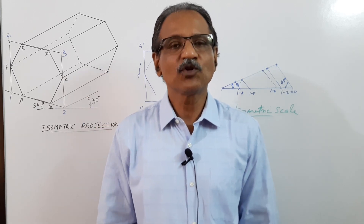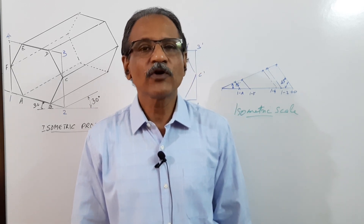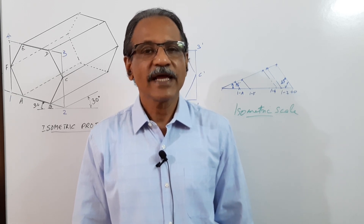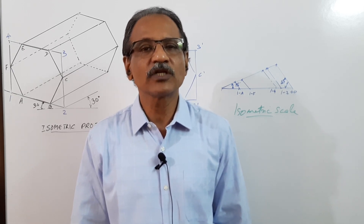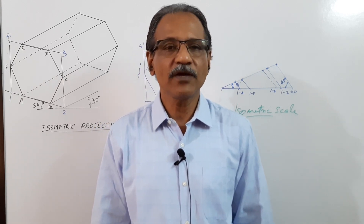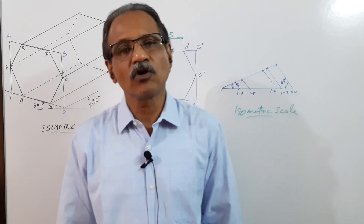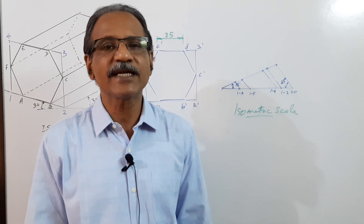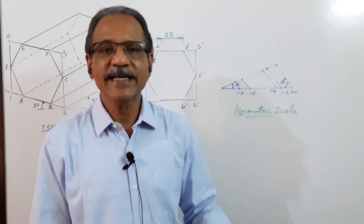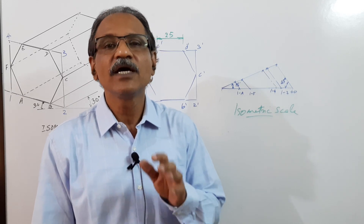Hi students, welcome to engineering graphics class. I'm Dr. Vinod Kumar. In this video we are going to draw the fourth module problems in the fourth module of KTU's university examination on engineering graphics held on 16th July 2021. The first question in this module is to draw the isometric projection of a hexagonal prism, 25 mm side, 60 mm axis, lying on the ground on a rectangular face.